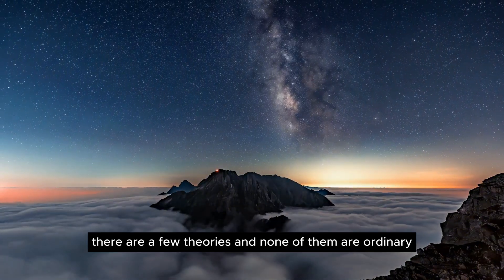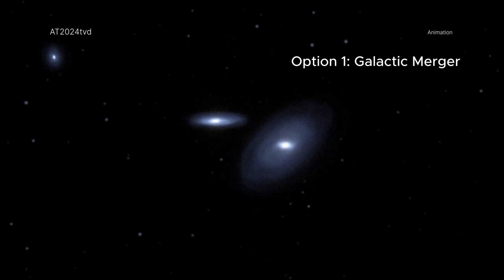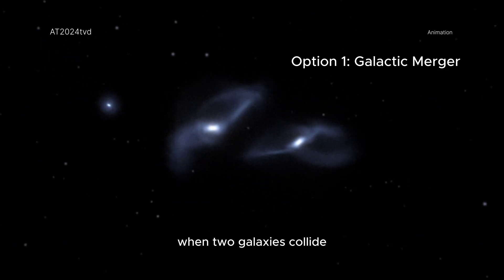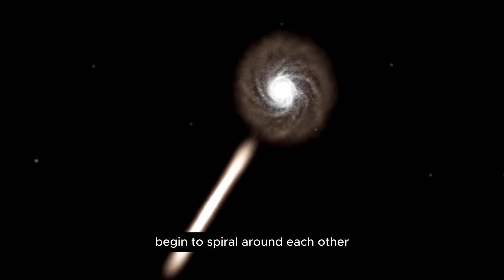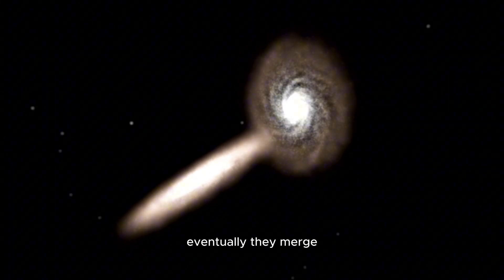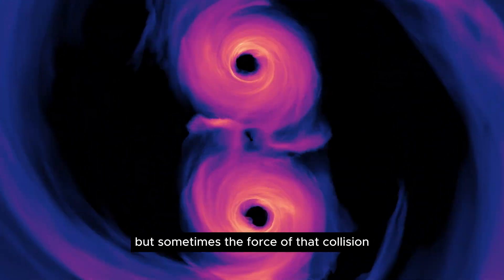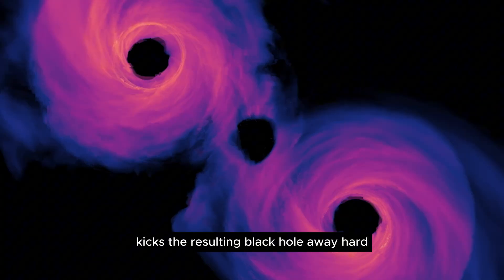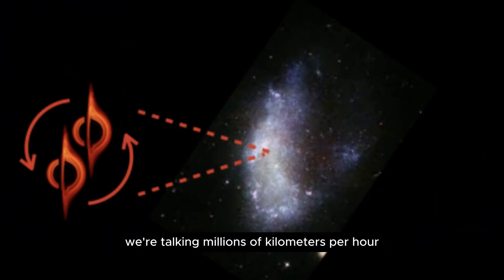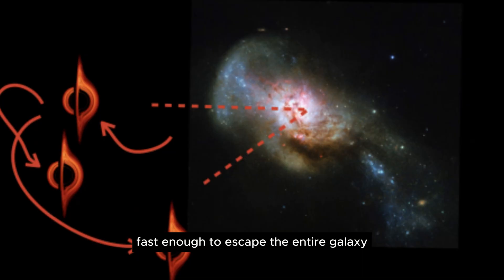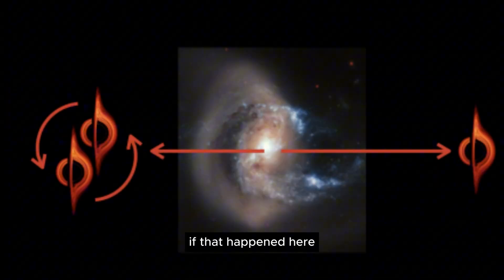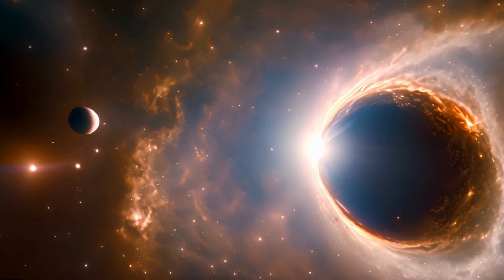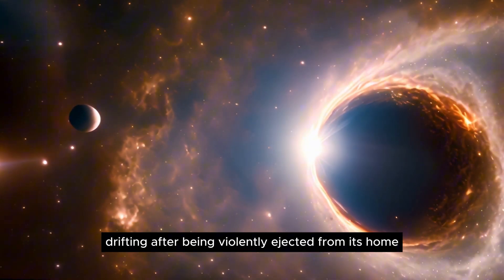There are a few theories, and none of them are ordinary. One possibility is a galactic merger. When two galaxies collide, their central black holes begin to spiral around each other. Eventually, they merge. But sometimes, the force of that collision kicks the resulting black hole away hard. We're talking millions of kilometers per hour, fast enough to escape the entire galaxy. If that happened here, the result could be exactly what we're seeing: a lone black hole drifting after being violently ejected from its home.